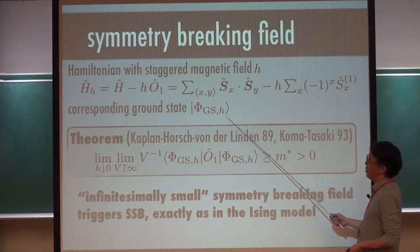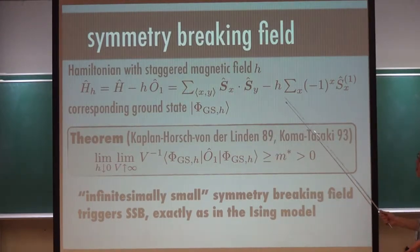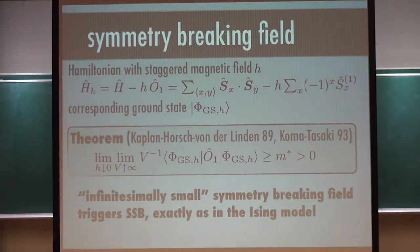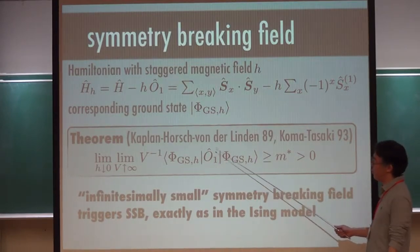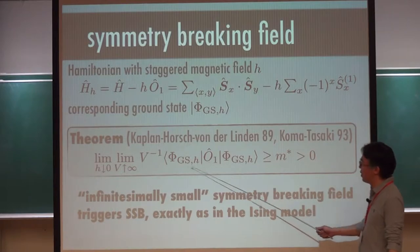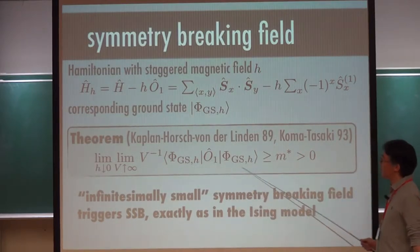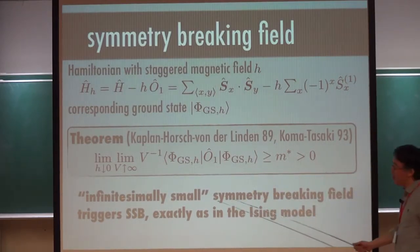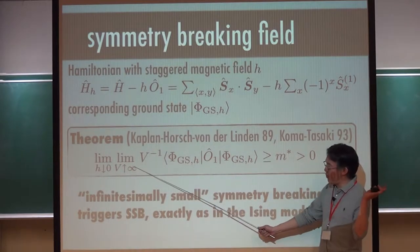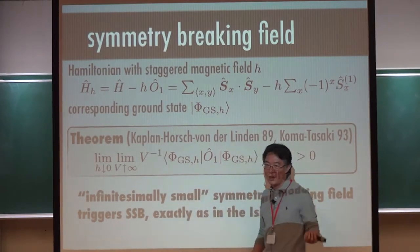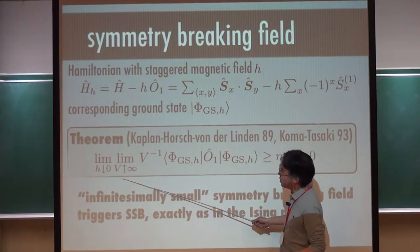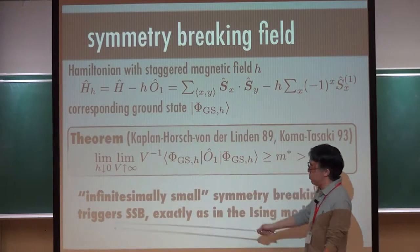I denote by psi-ground-state-H the corresponding ground state for this Hamiltonian with staggered magnetic field. What we can prove is something we expect: if we consider the expectation value of order parameter O1 divided by V, in this ground state with H, and take the same limit — you first take the infinite volume limit and then let H go to zero — if you switch this order, you simply get zero.